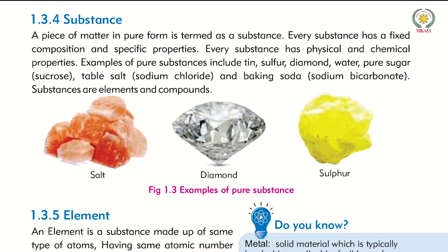A piece of matter in pure form is termed a substance. For example, if it is purely carbon, it will have a transparent glass-like color. Sulfur in its pure form will be yellow. If it exists in pure form, it is known as a substance — with fixed properties.